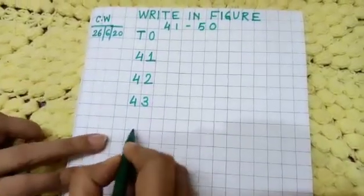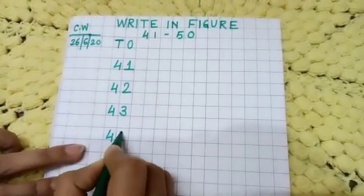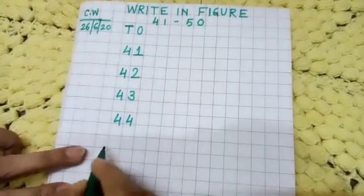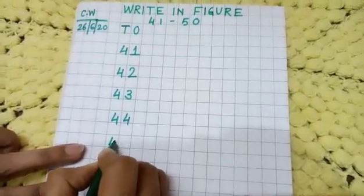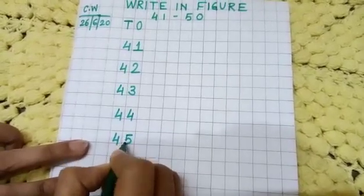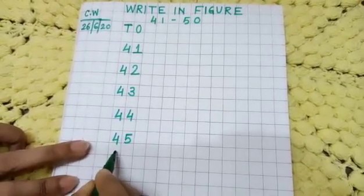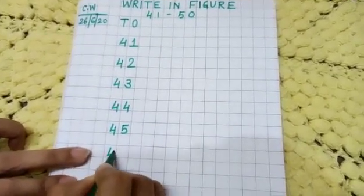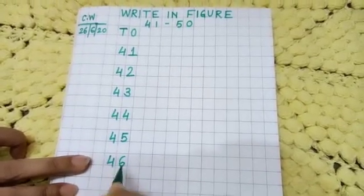Leave the box, 4, 4, 44. Leave the box, 4, 5, 45. Leave the box, 4, 6, 46.